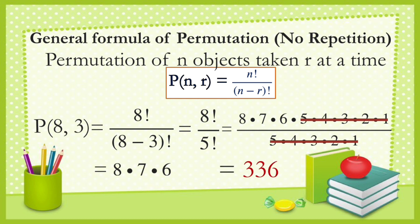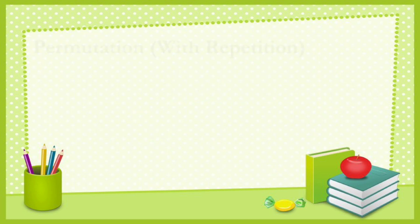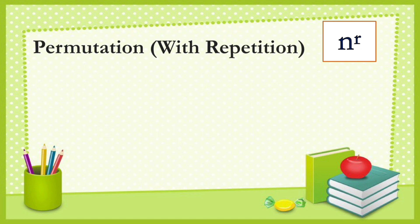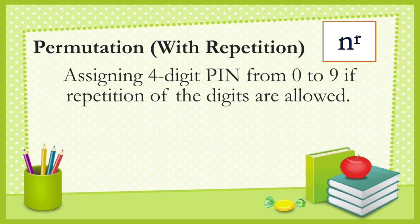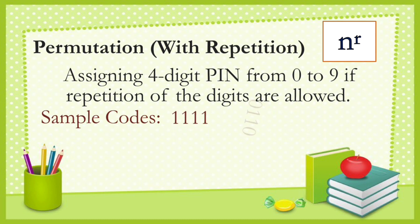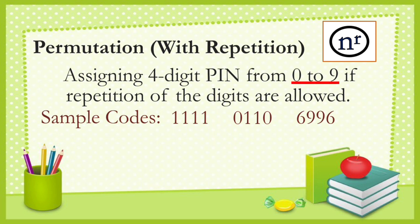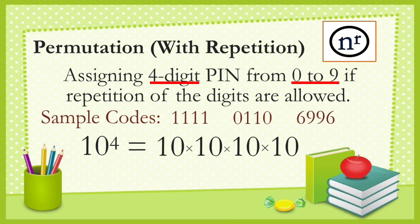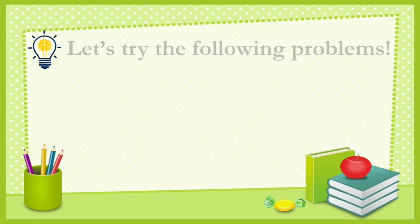For permutation with repetition, the formula is n raised to r. For example, assigning a four-digit PIN from 0 to 9 where repetition of digits is allowed — sample codes include 1111, 0111, 0101, 1069, and 96. There are 10 choices from 0 to 9 and we need four digits, so n = 10 and r = 4. That gives 10 to the 4th power, or 10,000 possible PINs.